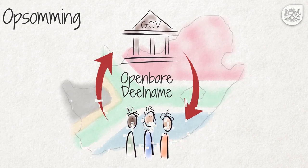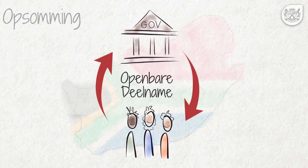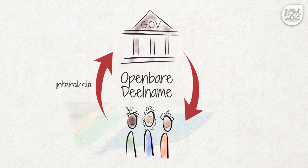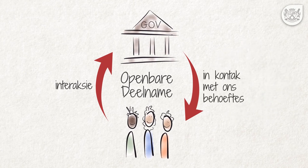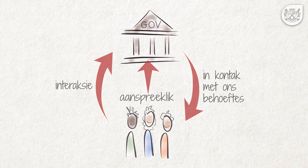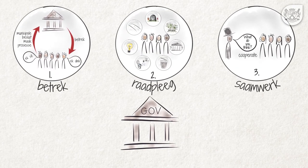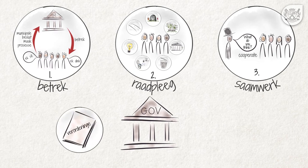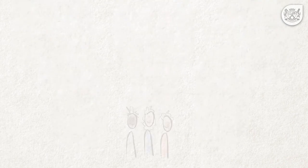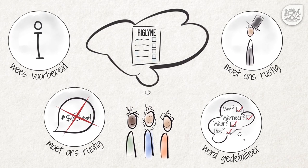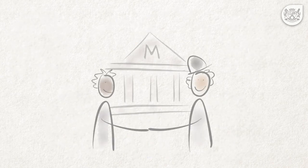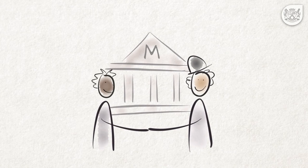Opsomming: In hierdie video het ons die rol van openbare deelname in die demokrasie verduidelik. Openbare deelname stel ons in staat om op 'n deurlopende basis met ons verkoose regering oor sake wat ons raak te verkeer. Deur openbare deelname bly die regering in voeling met ons behoeftes en hou ons weer die regering verantwoordbaar. Ons grondwet en wette stipuleer uit wat plaaslike regering moet doen om openbare deelname in belangrike besluitnemingsprosesse, soos die opstel van verordeninge en die GOP, te verseker. Ten einde suksesvol aan munisipale prosesse deel te neem, moet ons op 'n gepaste en konstruktiewe wyse tydens openbare vergaderings optree. Dit sal daartoe bydra dat ons 'n gesonde verhouding met ons munisipaliteit opbou.